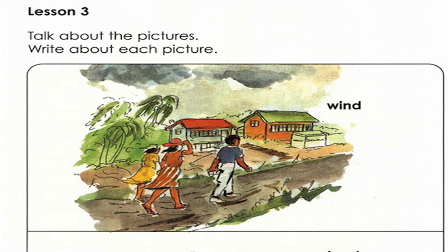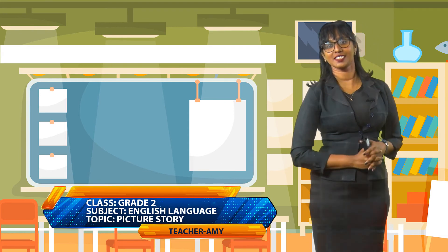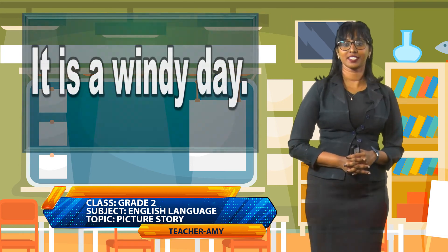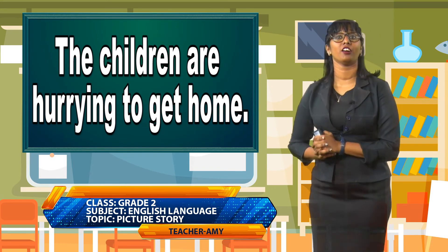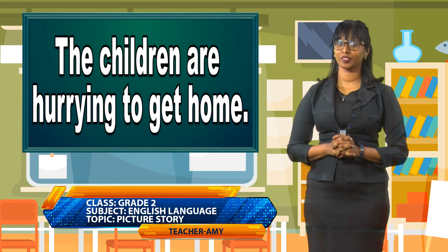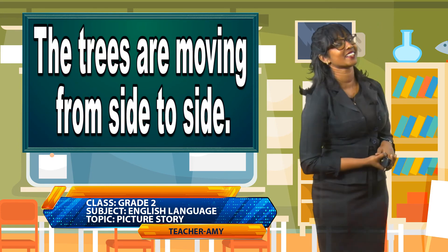Now in the picture, we can see the person in red holding on to her hat. Can you guess why she's holding on to her hat? She's holding on because the wind is very strong, and if she doesn't, it's going to be blown away. Now it's time for us to write some sentences. We can say, it is a windy day. The children are hurrying to get home. The trees are moving from side to side.